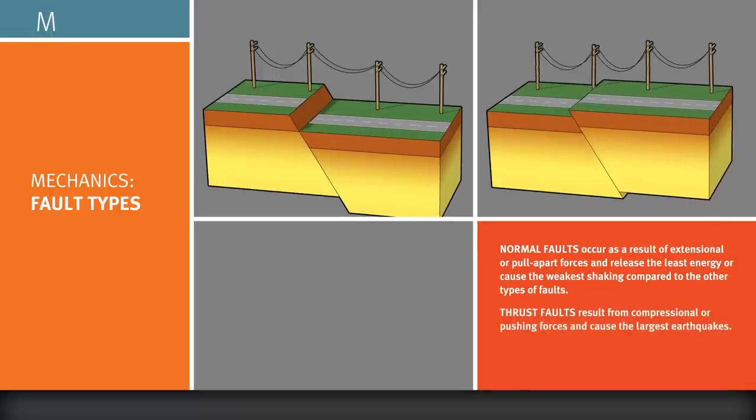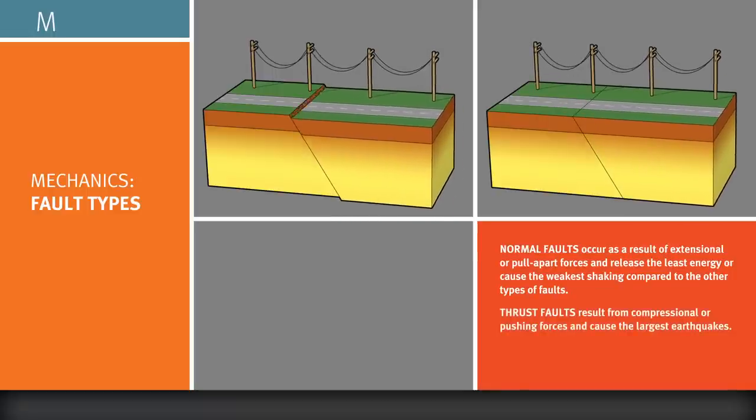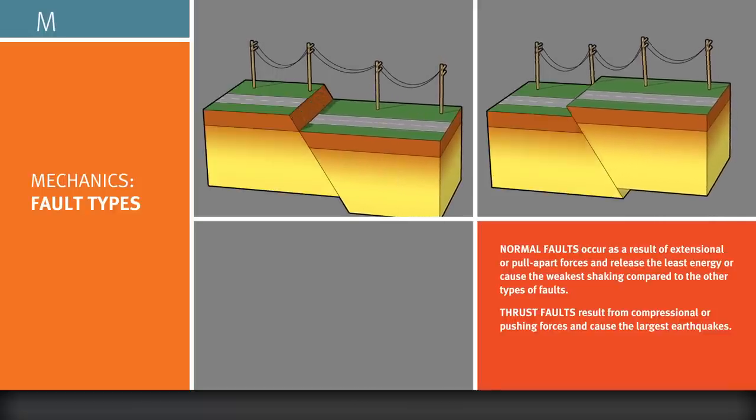Thrust or reverse faults are generally found in convergent plate boundary zones, where plates collide with one another and experience compressional forces. These faults cause the largest earthquakes.